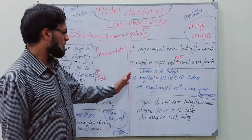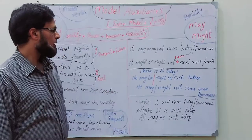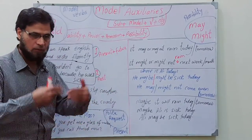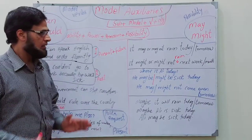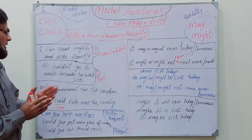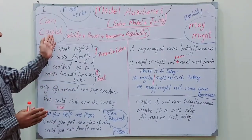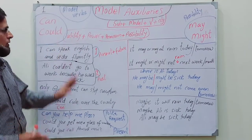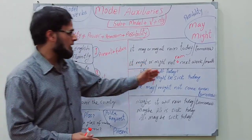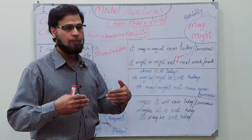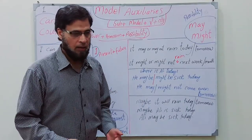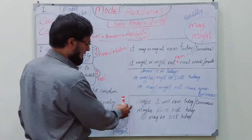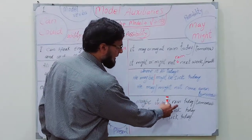So the key distinction is: can and could are mostly used for ability or power, while may and might are mostly used for possibility. This helps remove confusion. Note: 'maybe it will rain today' — 'maybe' written as one word functions as an adverb.